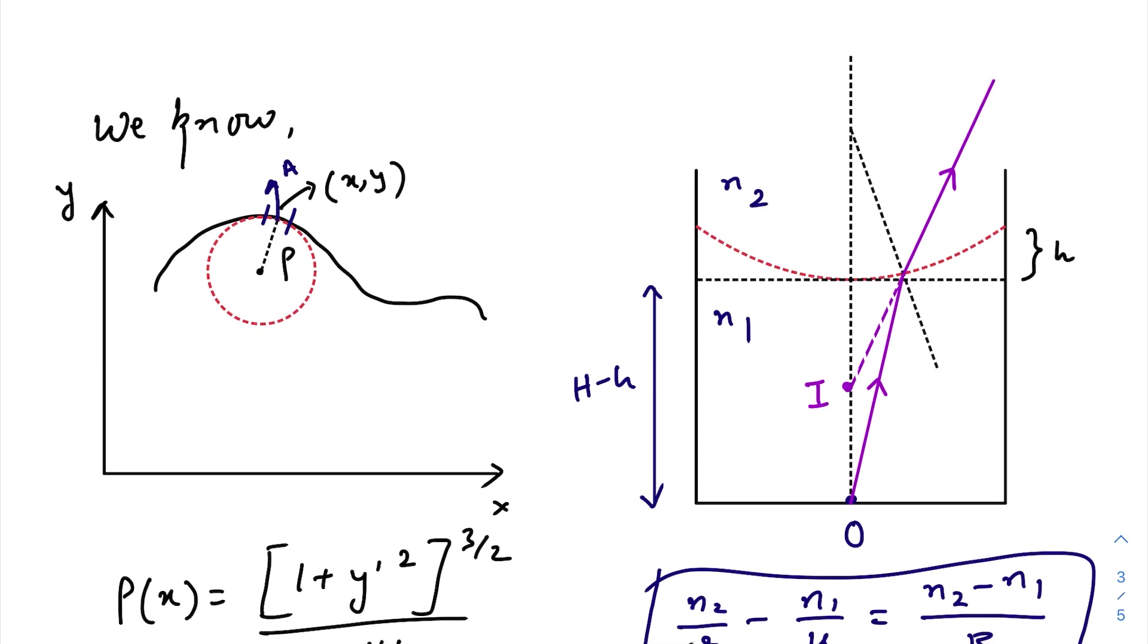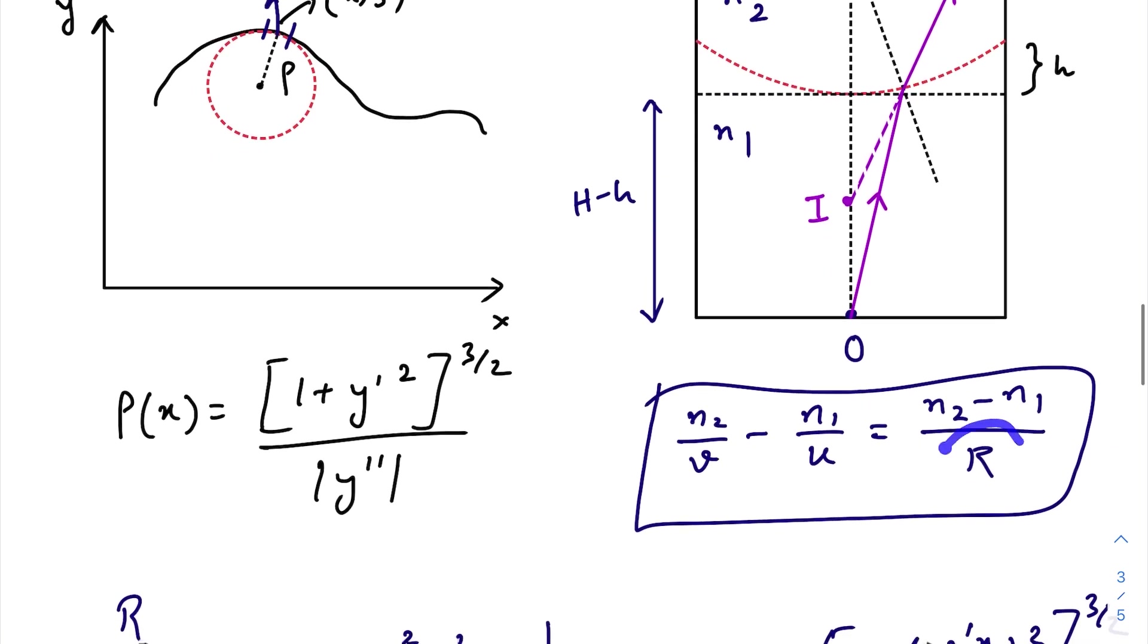...the initial medium and n₂ being the final medium. So first we need to find out the radius of curvature.